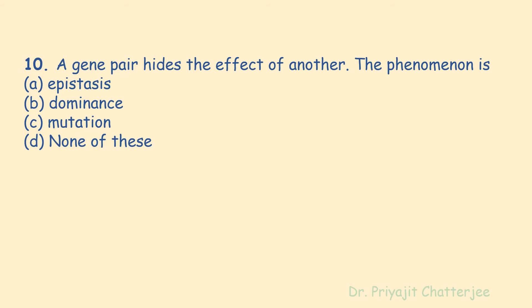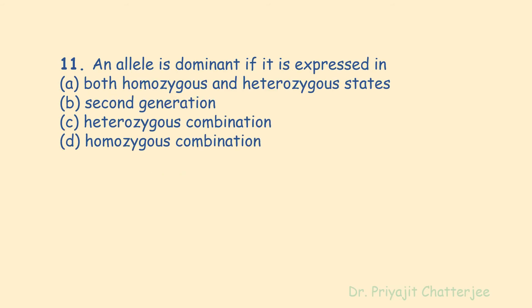The next question: when a gene pair hides the effect of another, the phenomenon is called — options are epistasis, dominance, mutation, or none of these. The correct answer is epistasis. Epistasis is the phenomenon where one gene masks the action of another gene. Dominance is the expression of a character in a heterozygous organism. Mutation is a sudden, heritable, discontinuous variation due to change in chromosomes, DNA sequence, or genes.